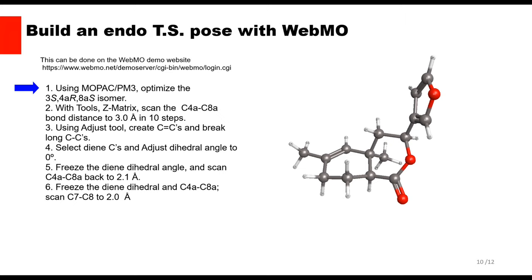Mopac PM3 is used here because it is faster than PM7, which is an issue on the WebMO demo site, since that site limits jobs to 60 seconds. Okay, here is the optimized product.